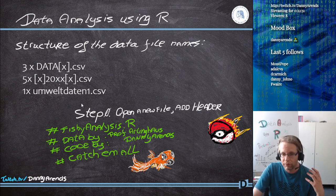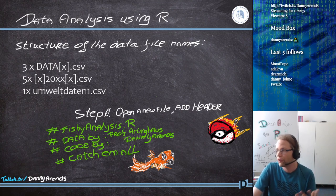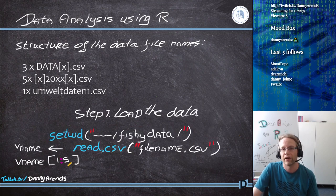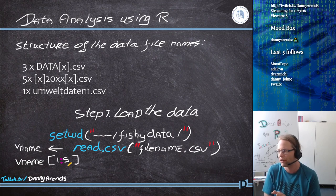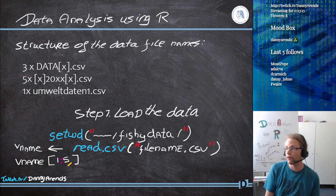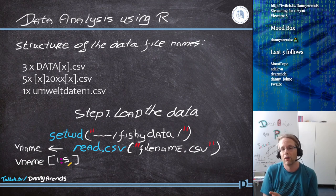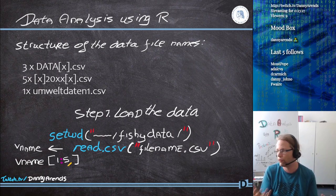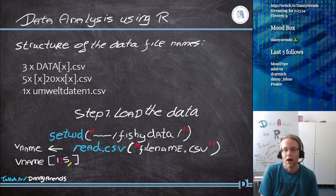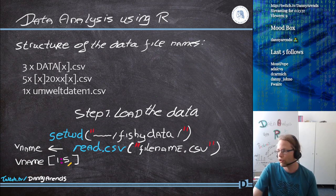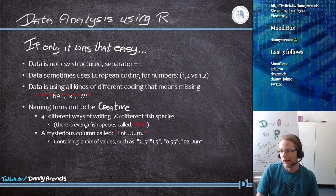After opening a new file and adding a header called 'Fishy Analysis', the next thing is loading in the data files. We've done this a couple of times during different lectures. The first step is to set the working directory to where we stored all our files, then do a read.csv on the file name, store it in a variable, and look at the first five entries using matrix coding.